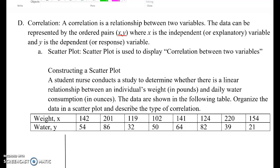A correlation is a relationship between two variables, especially quantitative variables. The data can be represented by the ordered pair x and y, where x is the independent variable and y is the dependent variable.